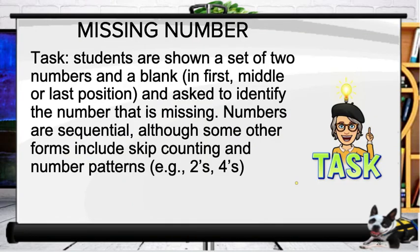The last early numeracy CBM is missing number. Students are shown a set of two numbers and a blank in the first, middle, or last position, then asked to identify the missing number. The numbers are sequential, although some forms might include skip counting or number patterns like twos, fours, sixes, etc.